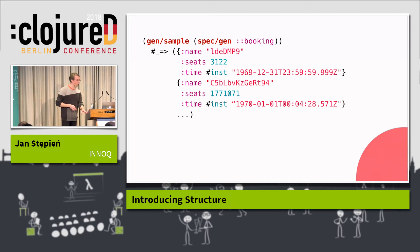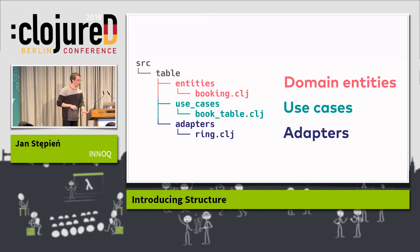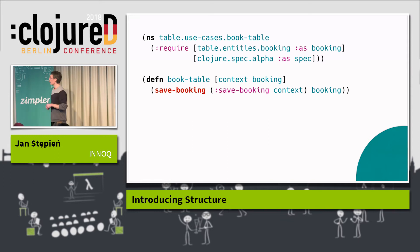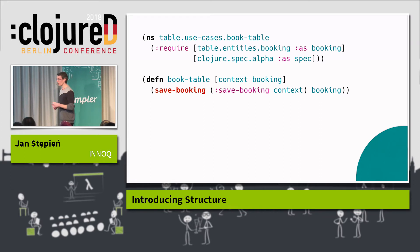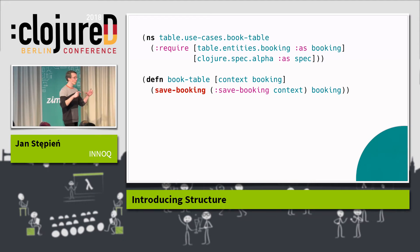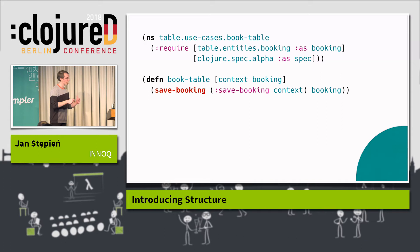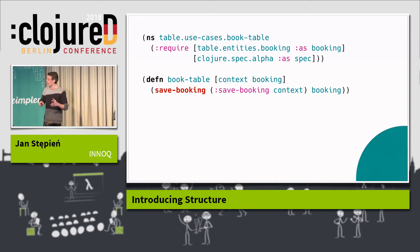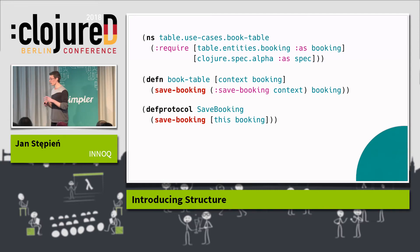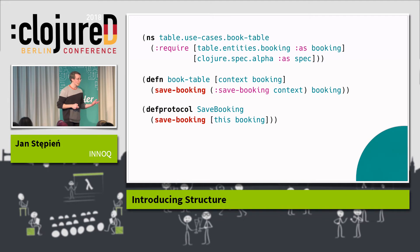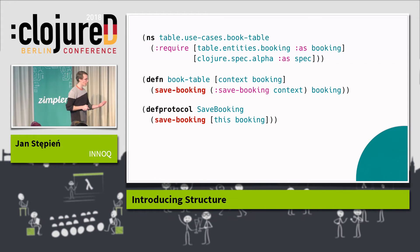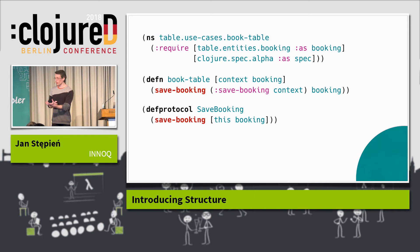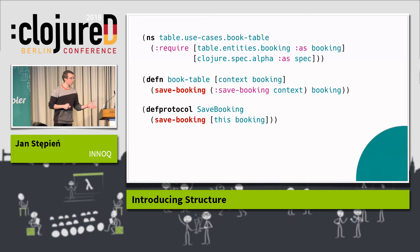So this is the entity. Now we can take a step to the next layer — our use cases. Here we want to book a table. In the book-table use case, we have the function book-table, which takes two arguments. The second one, booking, you've seen a second ago. Context is a map which I will use to inject all of the dependencies into this function — all the moving pieces in the application. I then call save-booking, which is defined as a protocol function. This allows me to implement save-booking with any implementation necessary in a particular situation: Postgres in production, an atom in testing, or something printing to standard output when testing in the REPL. I can make the decision as late as possible.